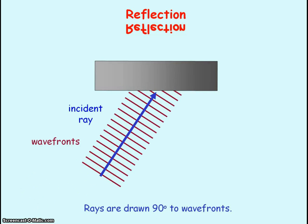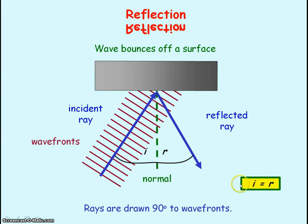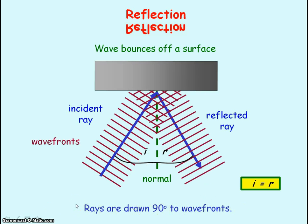Here is the incident wave. Waves incident on a surface can be reflected — that is, they can bounce off the surface. To determine the direction of the reflected wave, we need to first draw the normal line, which is a line perpendicular — 90 degrees — to the surface. The reflected ray occurs when the angle of reflection, the angle between the reflected ray and the normal, is equal to the angle of incidence, the angle between the incident ray and the normal. Remember to draw the wave fronts 90 degrees to the rays, so the reflected wave fronts will look like this.